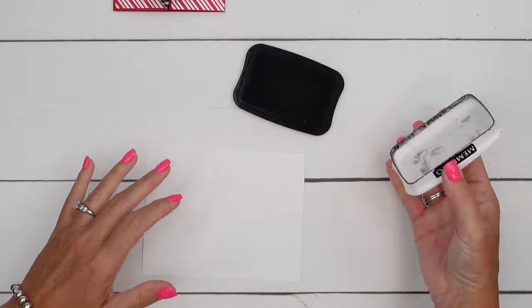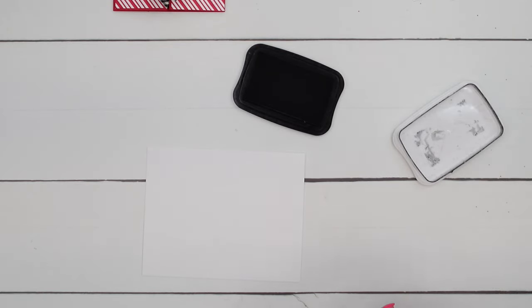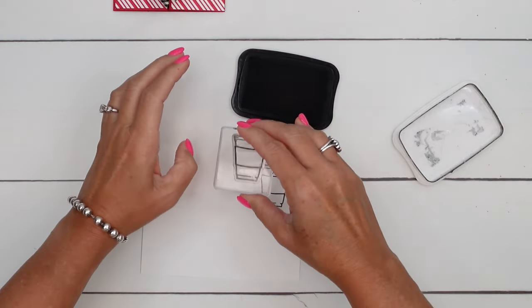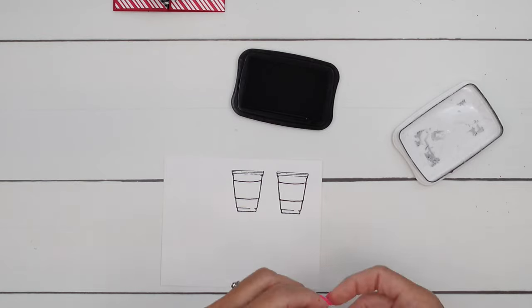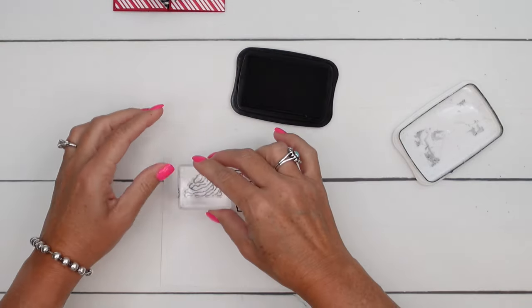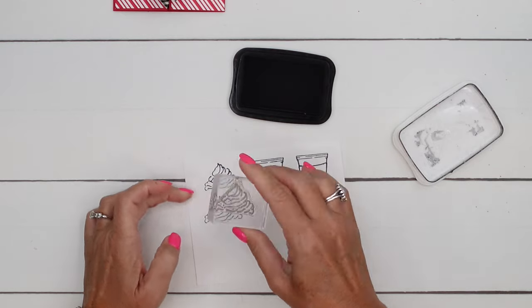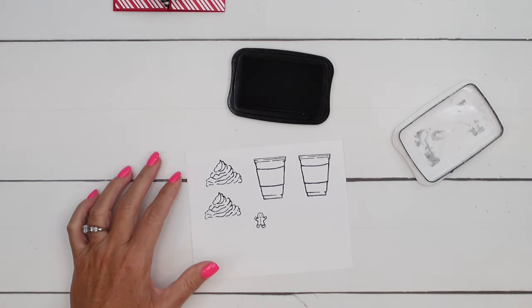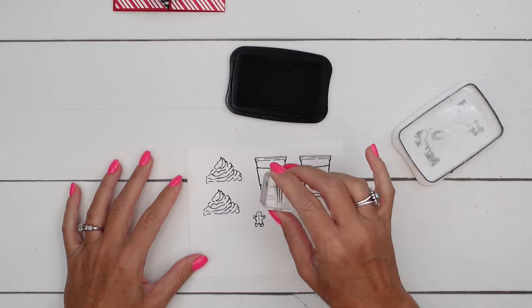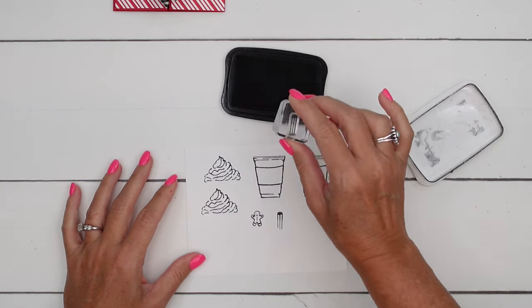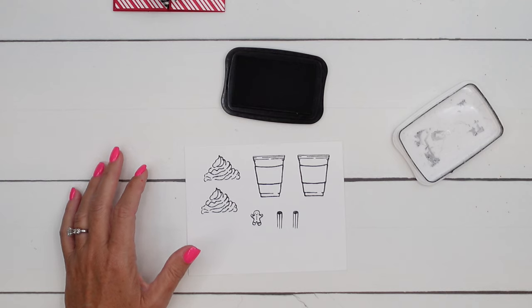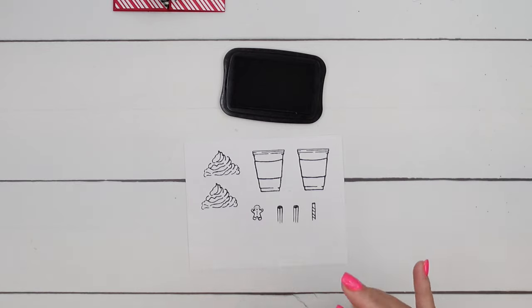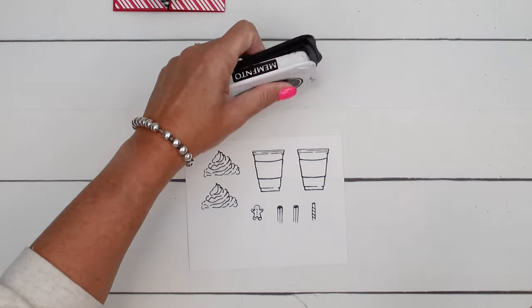We are going to use Memento Black and we are going to make two cups of hot cocoa. So we'll do two of the cups and then we're going to do two whipped creams. I always get whipped cream on my hot cocoa, always. And then we're going to do a little gingerbread man. He's very cute. Two cinnamon sticks. There's so many accessory stamps in this set. I just couldn't stop. I wanted to use all of them. And then a straw. So maybe that one's not hot. Maybe that's a frozen hot chocolate, right?